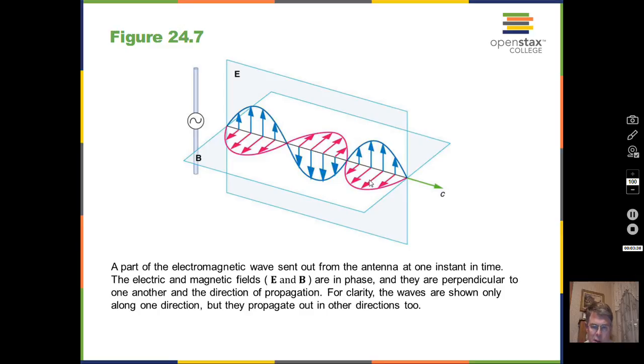There's some interesting facts about the relationship of the electric and the magnetic field strengths. The magnetic field actually can be calculated in Teslas equal to the electric field value in volts per meter divided by the speed of light. So there's a connection between the strength of the electric field and the strength of the magnetic field. And that connection is the speed of light.